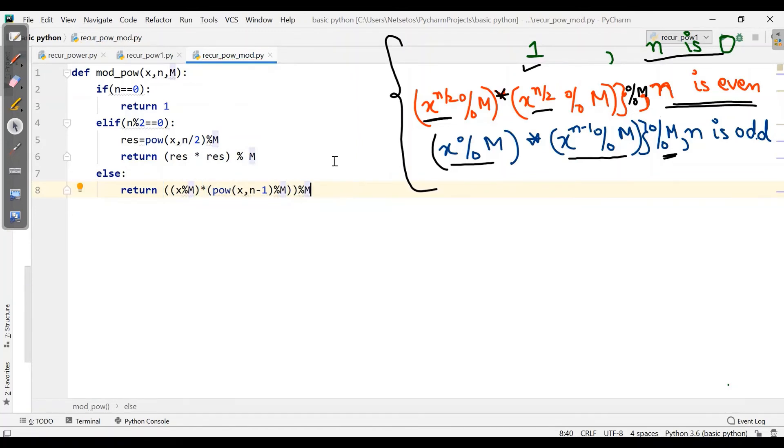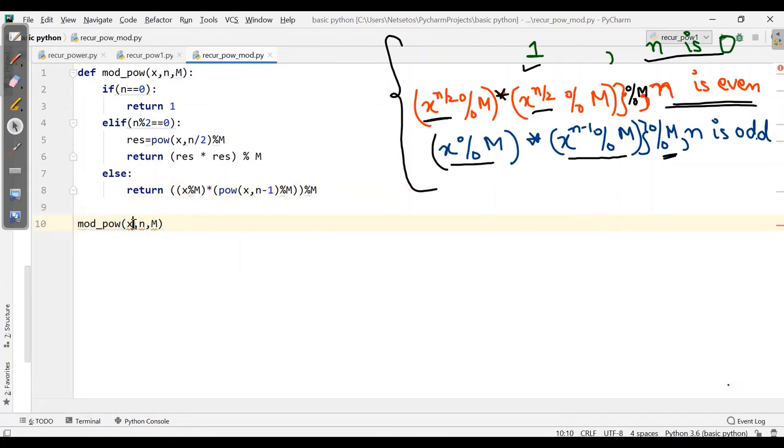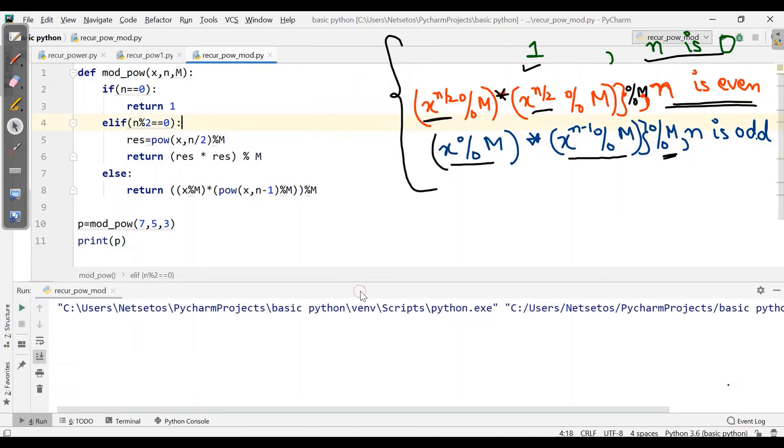Then I need to call this. Here it will be 7, 5, let's say 3. And I need to print the value, so I will write p equals and print p. So when I run this program I got 1.